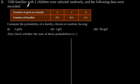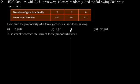Exercise 15.1, Question number 2. 1500 families with two children are selected randomly and the following data were recorded. Compute the probability of a family chosen at random having: first, two girls; second, one girl; third, no girl. Also check whether the sum of these probabilities is 1.